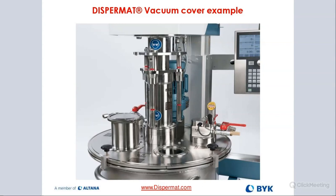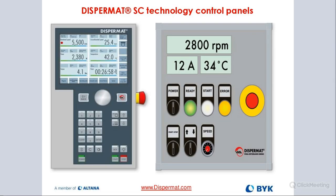Many years ago we had an instance where a customer opted for a cheap alternative on the container side and designed their own containers to match up to the vacuum cover. The problem was they were not sturdy enough — when the vacuum was applied, it completely pulled in the container, which was not a good thing and cost them a lot of money in repairs. So always look at the build quality and the type of materials used, especially when dealing with vacuum.